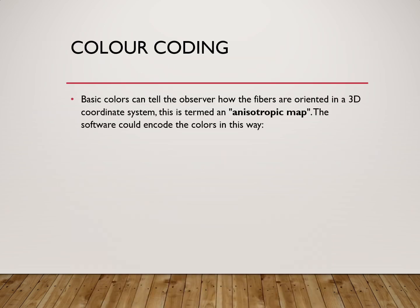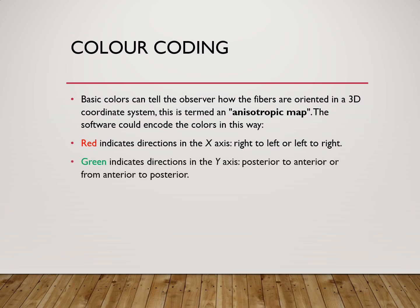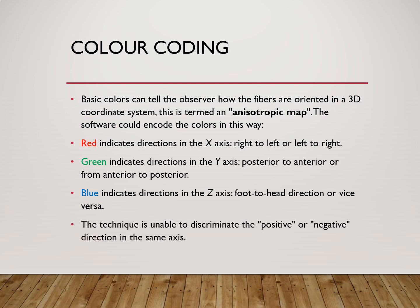Color coding: basic colors can tell the observer how the fibers are oriented in a 3D coordinate system, and this is termed as an isotropic map. The software encodes colors in this way: red indicates direction in the x-axis, i.e., right-to-left or left-to-right fibers; green indicates direction in the y-axis, i.e., antero-posterior or posterior-anterior fibers; blue indicates direction in the z-axis, i.e., foot-to-head direction or vice versa.